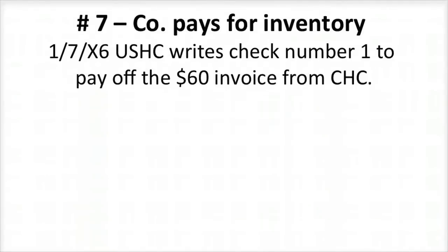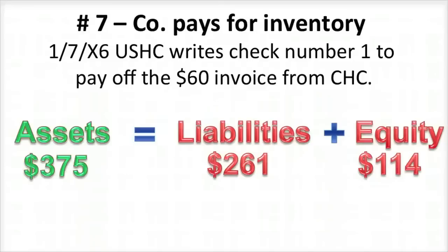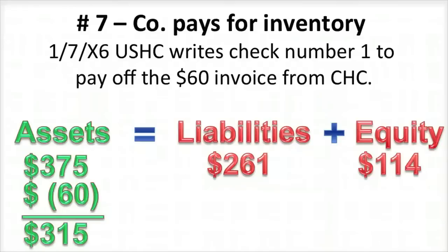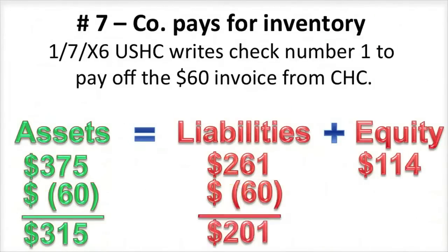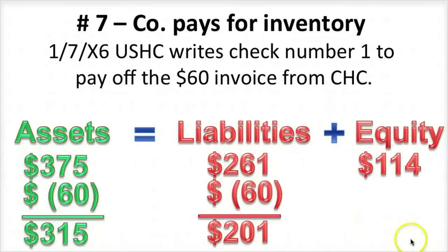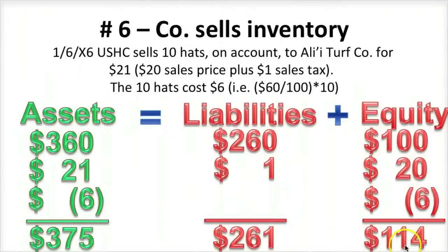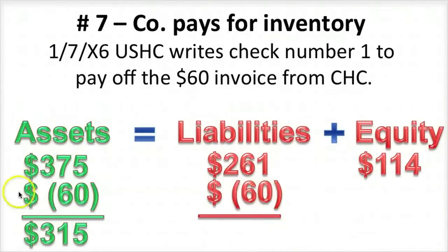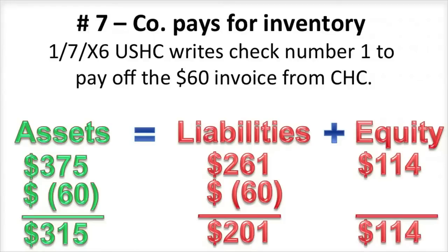On day seven, USHC writes check number 1 to pay off the $60 invoice from China Hat Company. We give away $60 in cash, reducing assets to $315. Our liabilities go down — we paid off that liability and liabilities are now $201. As you notice, equity did not change because all we did was reduce assets and liabilities equally. Equity is not impacted.